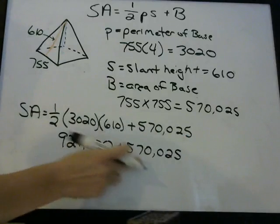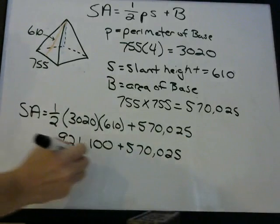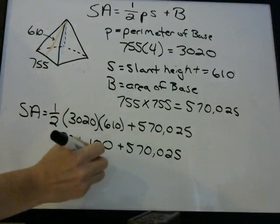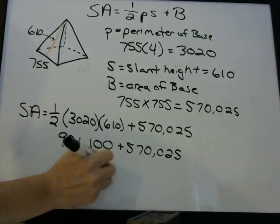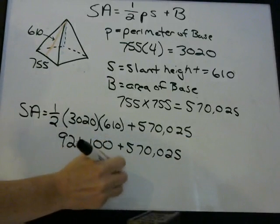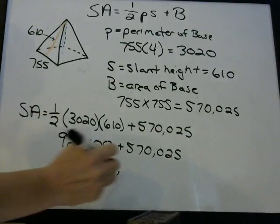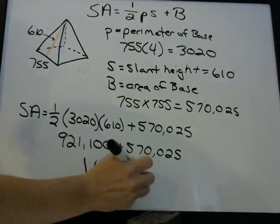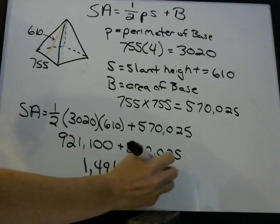So 921,100 plus 570,025 — add these two numbers together with your calculator — and you get 1,491,125 square feet.